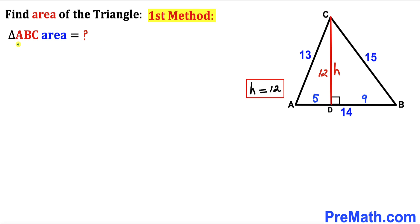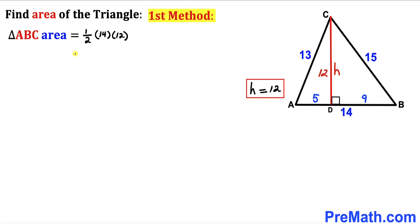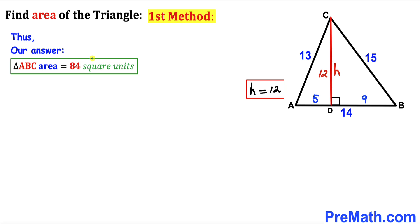Now let's calculate the area of triangle ABC. Recalling the formula: area = ½ × base × height. In our case the base is 14 and the height is 12, so area = ½ × 14 × 12 = 84. Thus the area of triangle ABC turns out to be 84 square units using the first method.